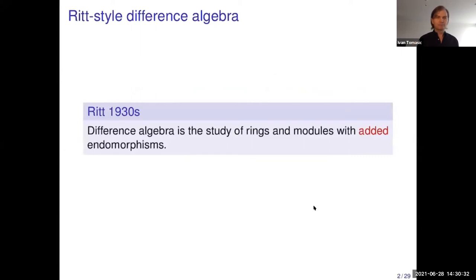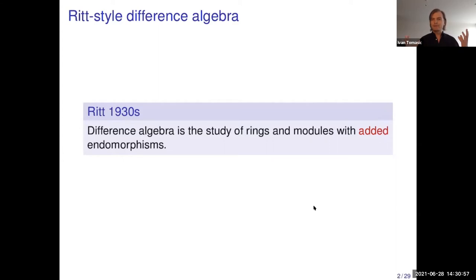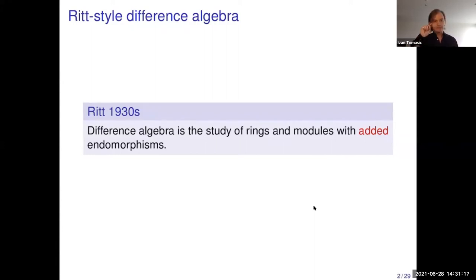Let me start with a little introduction to difference algebra, because I understand it may not be widely known. Ritt introduced difference algebra in the 1930s as the study of rings and modules endowed with distinguished endomorphisms. This was meant to be an abstract framework to unify previous studies of recursions or difference equations in the calculus of finite differences, various functional equations, the study of algebraic functions on dynamical systems, etc.